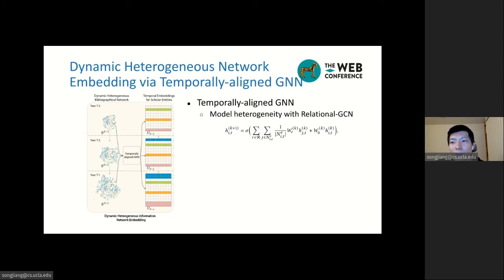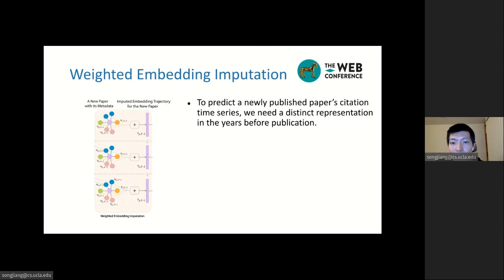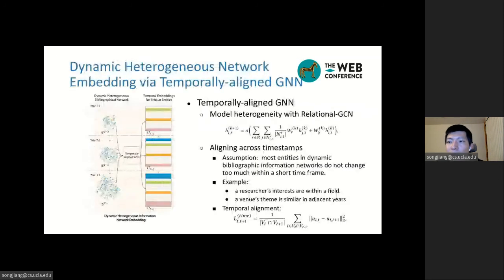To model the dynamic, we have an assumption of the bibliographic network, which is that most entities will not change too much in a short time. For example, a researcher's interests are usually within one field, and a venue's theme is similar in adjacent years. Based on this assumption, we propose a temporal alignment that forced the embeddings for the same entity in nearby years to be close to each other.